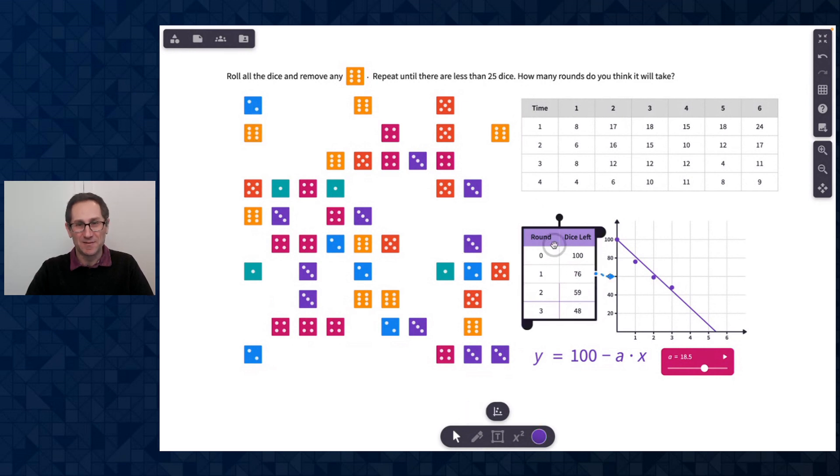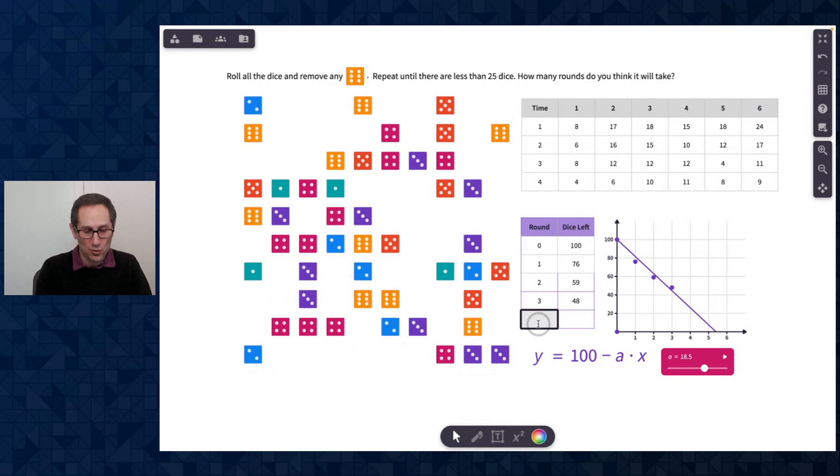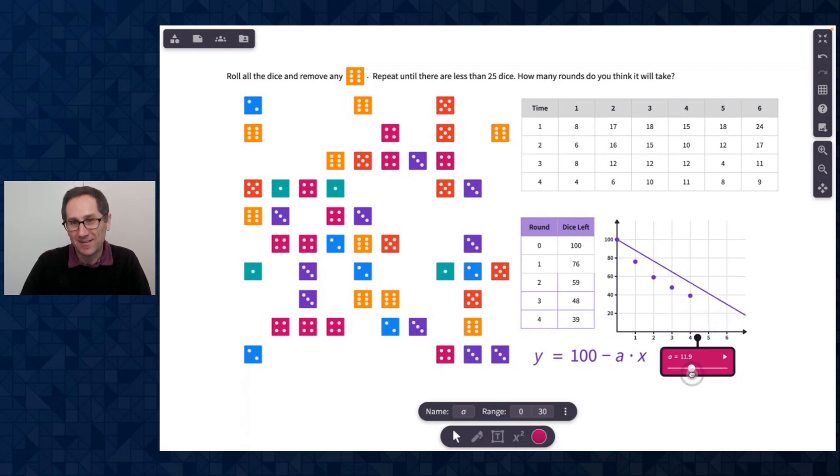Oh, this time I only got nine. So let me delete, oh first, let me add it to my table here. So let me do four. And 48 minus nine is 39. Oh, that is making this graph not look as great. Maybe it's something like that. First, let me delete all of these nine.